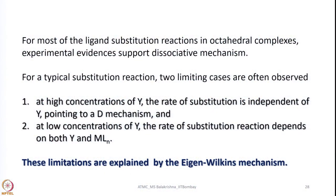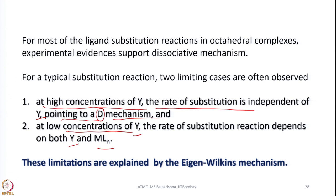For most ligand substitution reactions in octahedral complexes, experimental evidence supports a dissociative mechanism, meaning two limiting cases are observed. At higher concentration of entering ligand Y, the rate of substitution is independent of Y, pointing to a D mechanism — the entering ligand concentration is very high but it does not participate in the rate determining step. At low concentration of Y, the rate depends on both Y and the substrate molecule. These two limiting cases are explained by the Eigen-Wilkins mechanism.